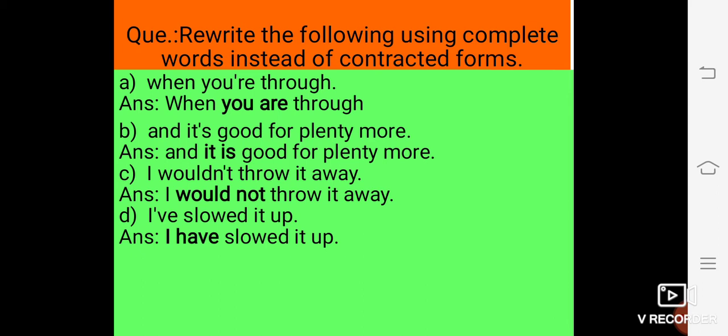C, I wouldn't throw it away. Once again, here, wouldn't, that is the contracted form. We must write this sentence as I would not throw it away.